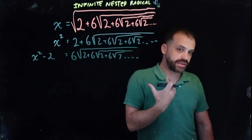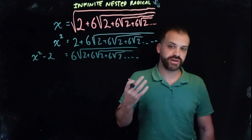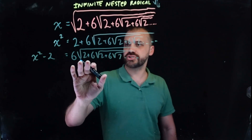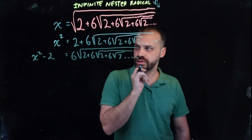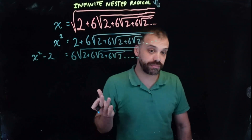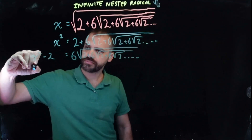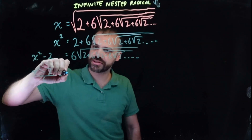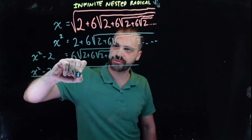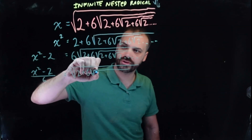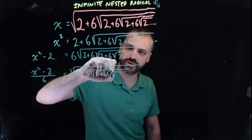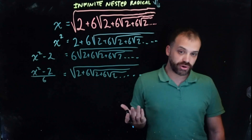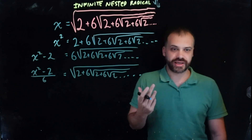It seems like we're not making any progress — we've just got this forever and ever. But this says 6 times something, so I can divide both sides by 6. x squared minus 2 divided by 6 equals the square root of 2 plus 6 times the square root of 2 plus 6 times the square root of 2, forever and ever. We're not getting anywhere... but this is magic.